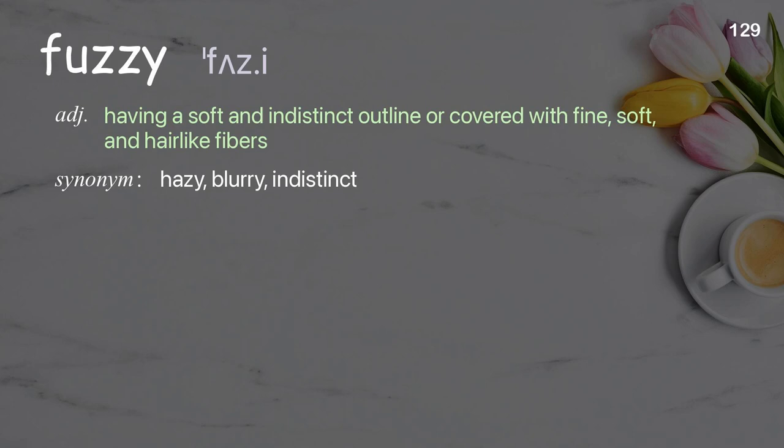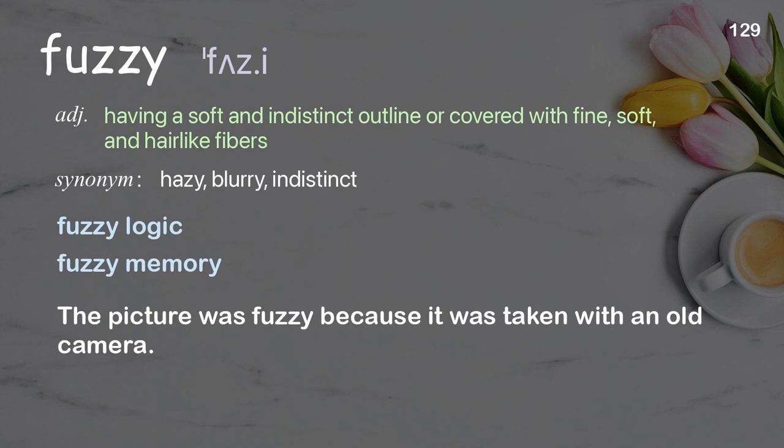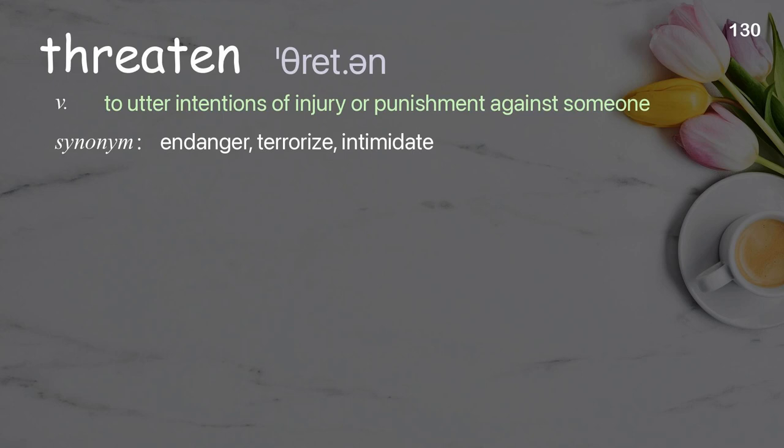Fuzzy: having a soft and indistinct outline or covered with fine, soft, and hair-like fibers. Examples: fuzzy logic, fuzzy memory. The picture was fuzzy because it was taken with an old camera.